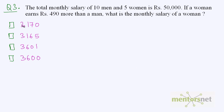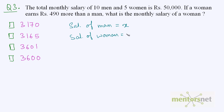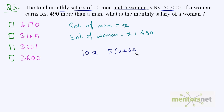Let's move on to question 3. The total monthly salary of 10 men and 5 women is 50,000 rupees, and a woman earns 490 rupees more than a man. Let the salary of a man be x, so the salary of a woman is x plus 490. The salary of 10 men is 10x, and the salary of 5 women is 5 times (x plus 490). Adding these gives 50,000.